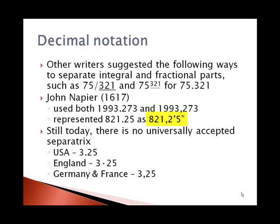Today notation is mostly uniform, but different countries still use different things. In the United States we use a decimal point on the bottom; in England at times it's in the center; and in Germany and France, a comma is used.